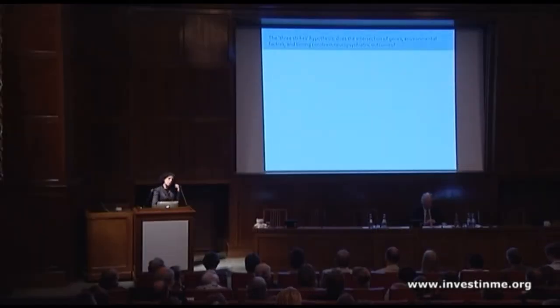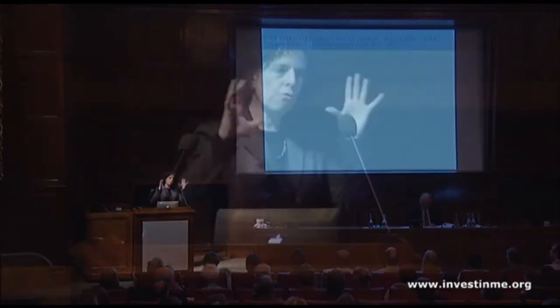One of the approaches we take is a framework that allows us to try to understand disease. I call it the three strikes hypothesis. In order to understand who gets sick, when, where, and why, you need to think about the genes, the environmental factors, and the timing — the temporal context in which the genes and the environment intersect.